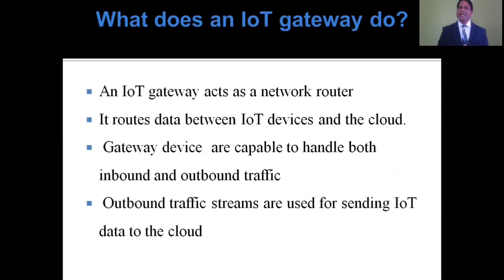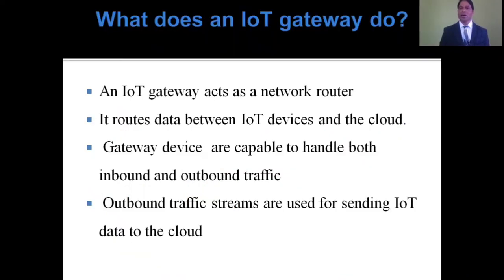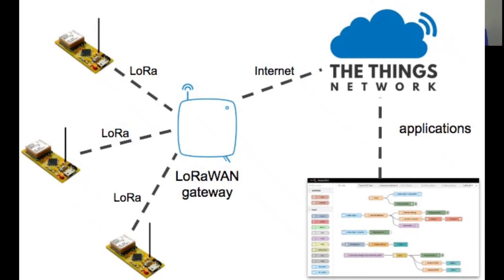An IoT gateway acts as a network router — it routes data between IoT devices and the cloud. Gateway devices are capable of handling both inbound and outbound traffic. Outbound traffic streams are used for sending IoT data to the cloud, so whatever data is sent from IoT to the cloud is called outbound traffic.